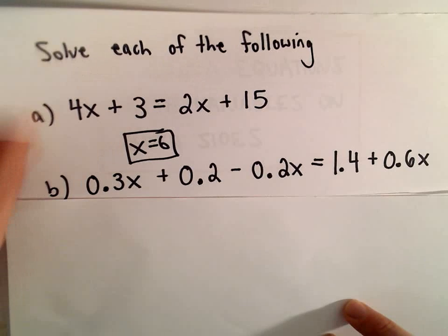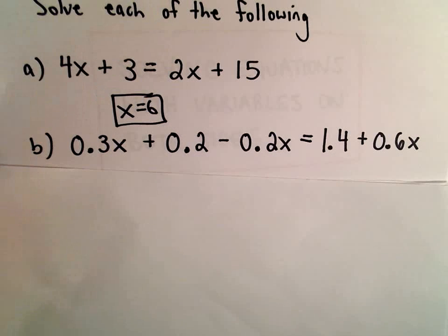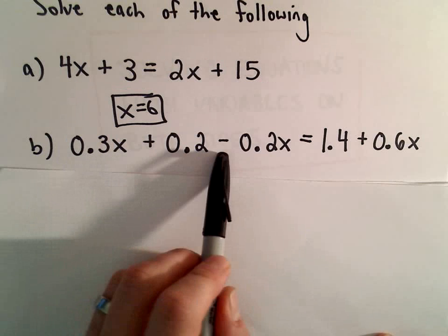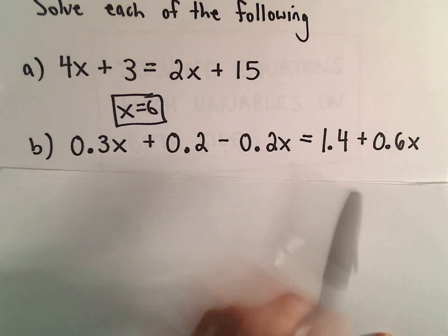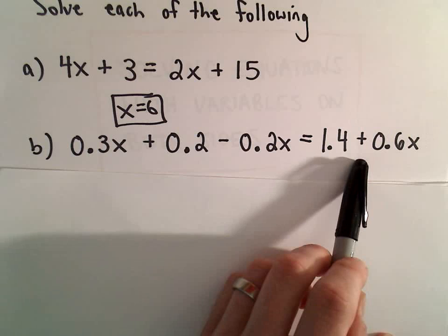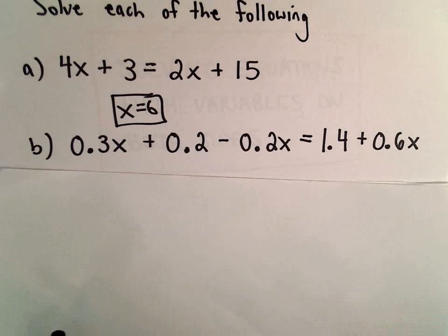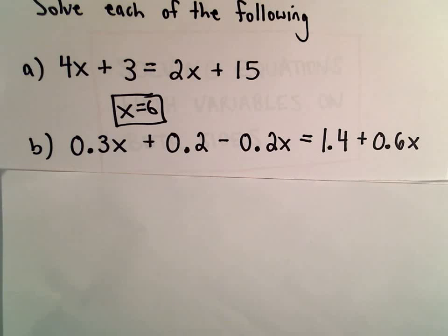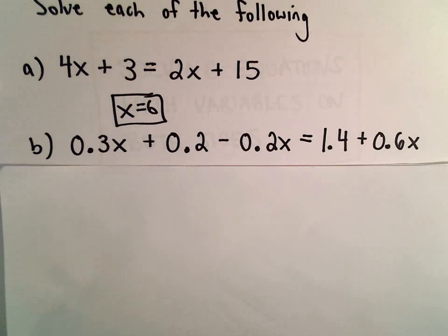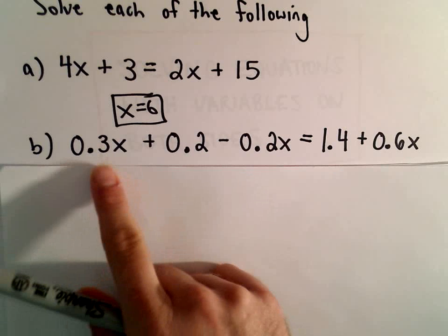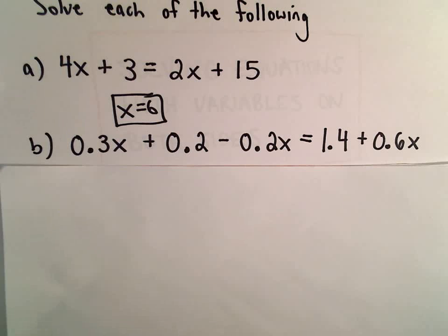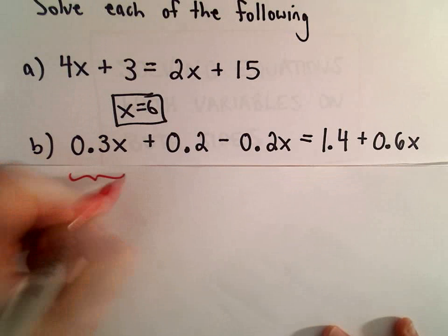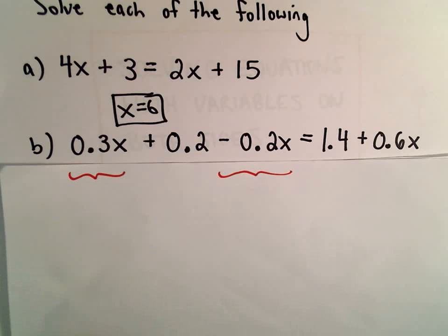So on the left side of my equation here, we've got 0.3x plus 0.2 minus 0.2x equals 1.4 plus 0.6x, so a lot of decimals. The first thing I'm going to do is combine the like terms on the left side. We have a 0.3x minus 0.2x,